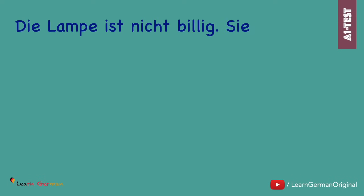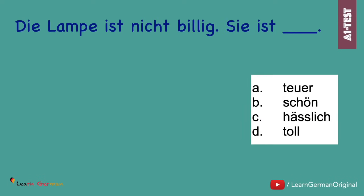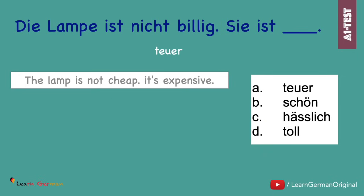The next one. Die Lampe ist nicht billig. Sie ist... Teuer. The opposite of the adjective billig is teuer. Die Lampe ist nicht billig. Sie ist teuer.